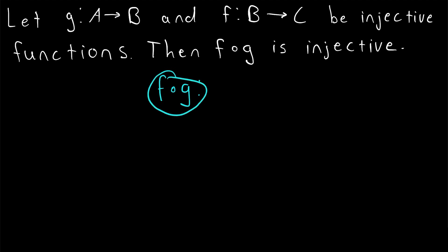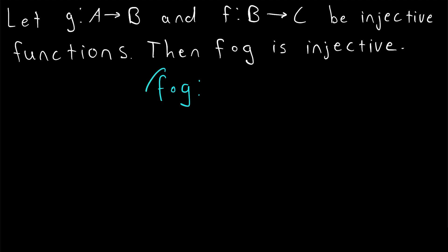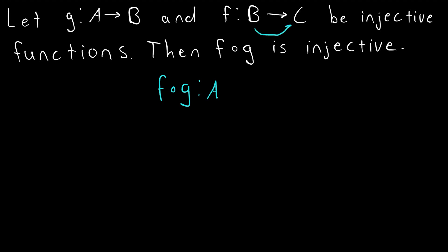In function composition, the order is from right to left. So an element will be evaluated in the function G first, and then it will be evaluated in F. Elements that go through this function will need to start in the domain of G, which is the set A. Then G will send them to some element in the set B, and then they can go into the function F.